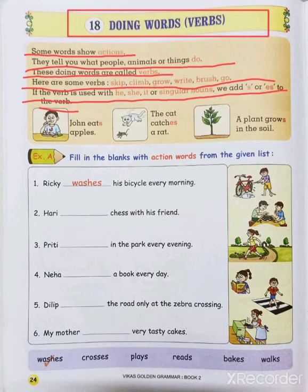As we have read earlier, we add ES when the verb ends in S, SH, CH, or X. For plural we use S. This is the same rule we have already covered, so this is revision.